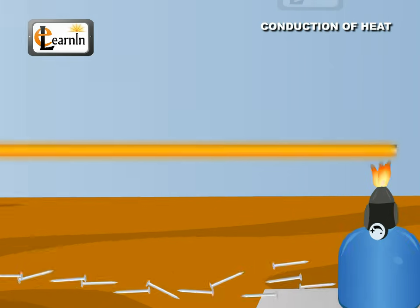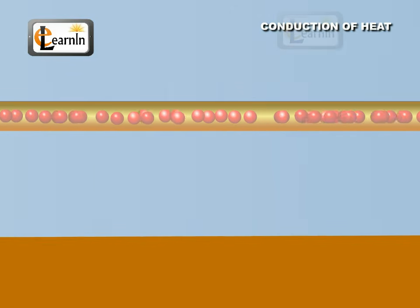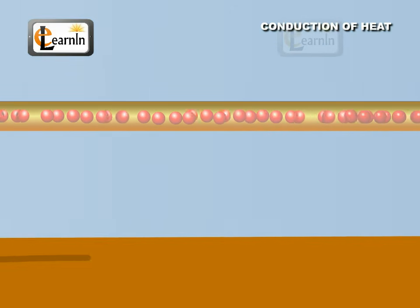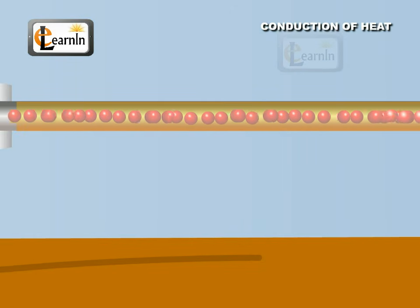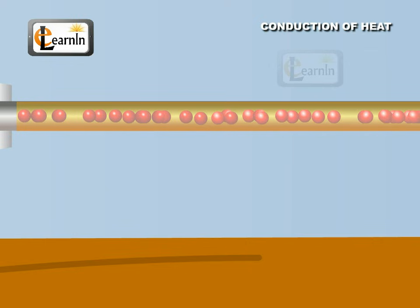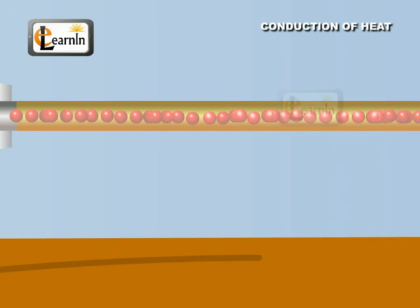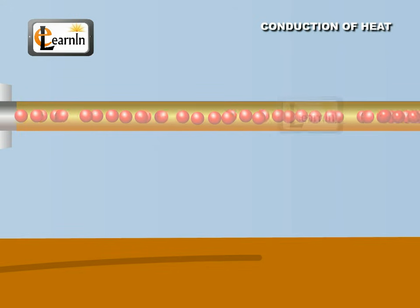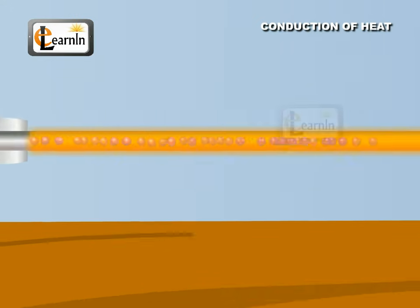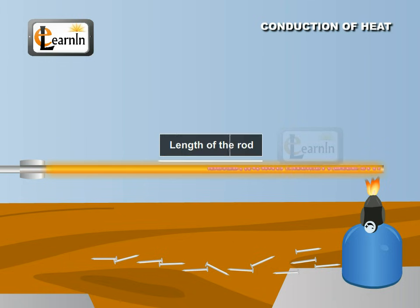We know that in solids, molecules are closely packed, touching one another. When heat is supplied to one end of the rod, the molecules absorb the heat and begin to vibrate vigorously. These vibrations are passed onto the neighboring molecules and make them also vibrate. This phenomenon is repeated throughout the length of the rod.